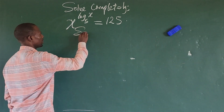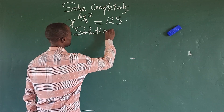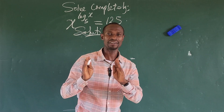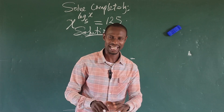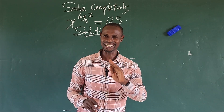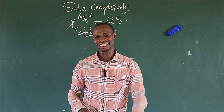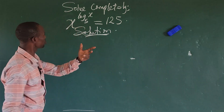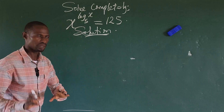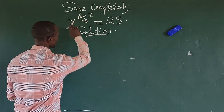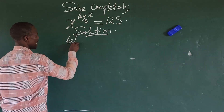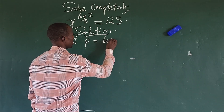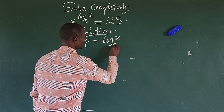So we have our solution. I'm going to give you a very quick method of solving this, step by step. The first thing we're going to do is make a simple substitution. Let p be equal to log_x 5.